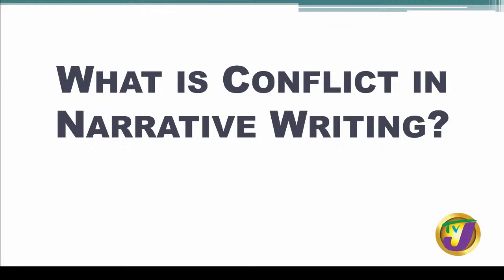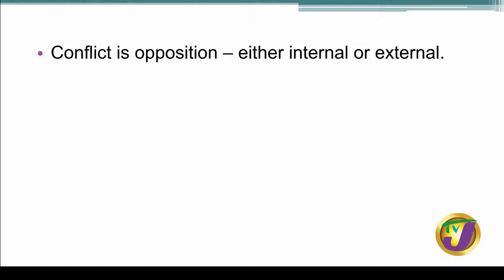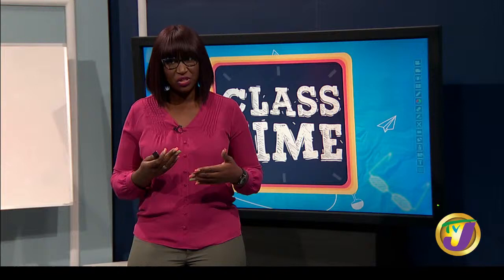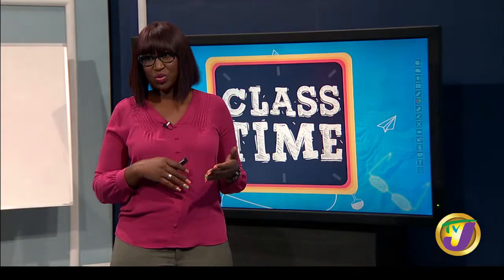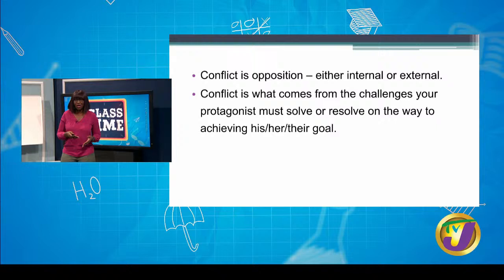So what is conflict in narrative writing? Conflict is an opposition — it can be either internal or external. In everyday terms it's a fight, but in a literary piece it's not necessarily a literal fight; there is a struggle of some nature. The opposition can come in the form of a challenge that your protagonist has to face or resolve.